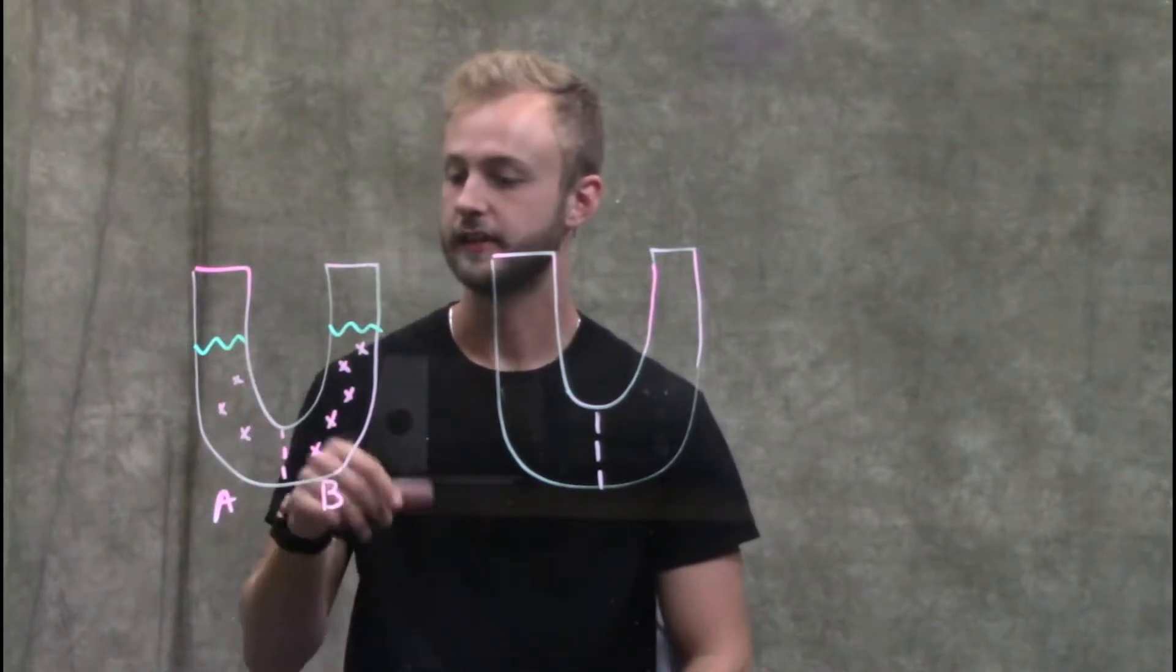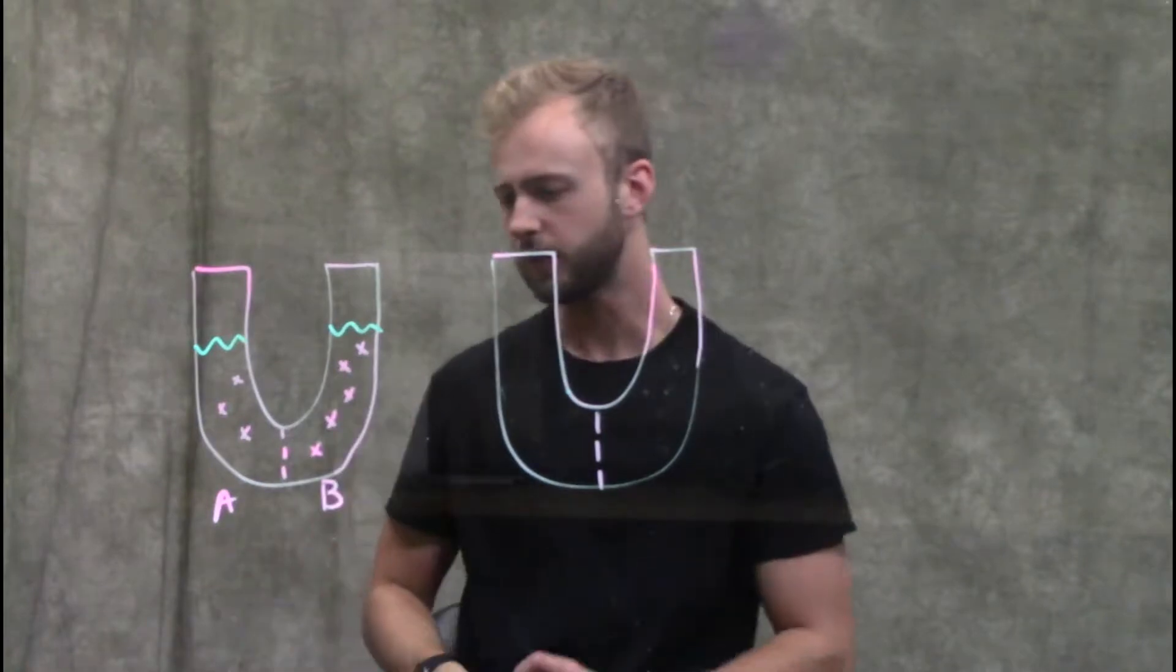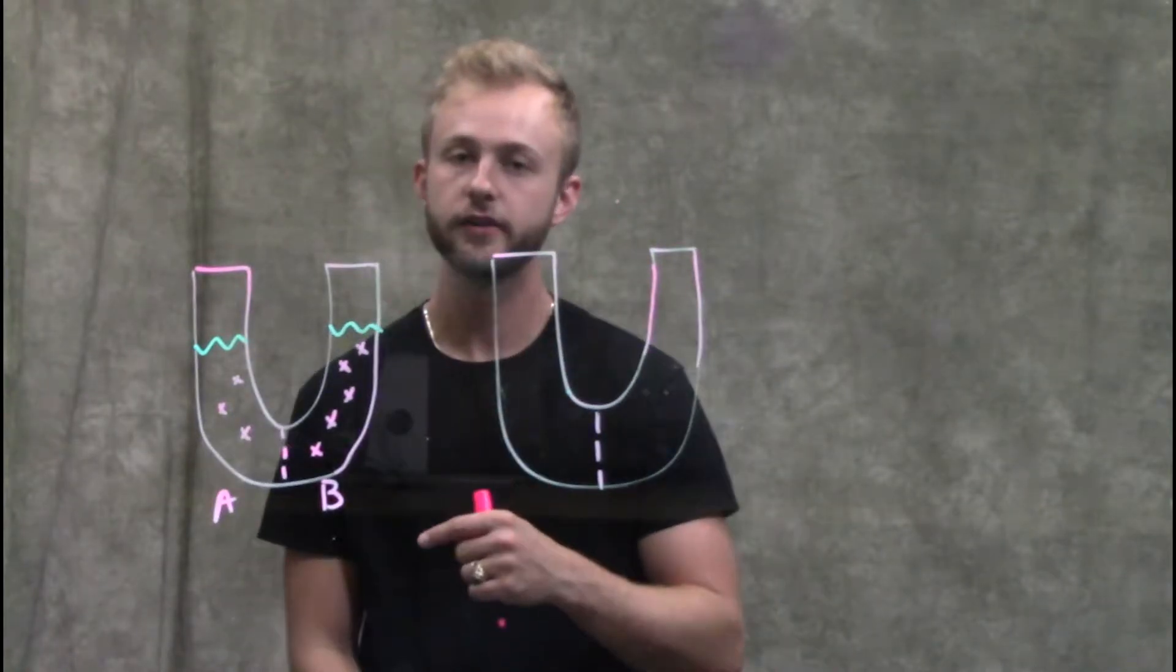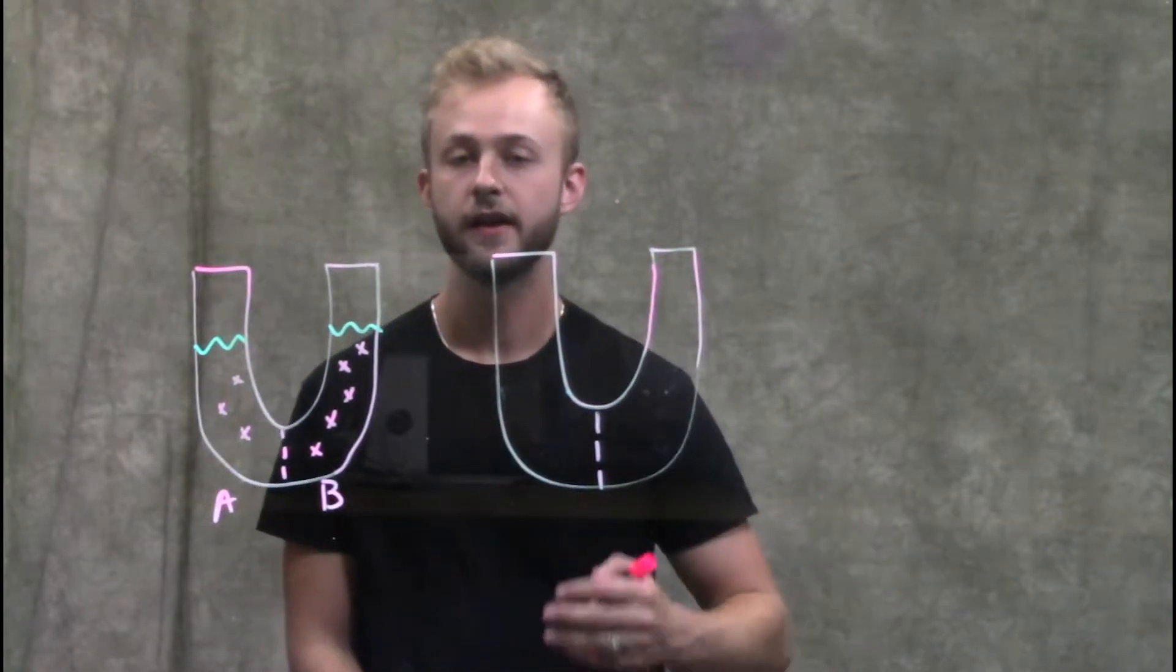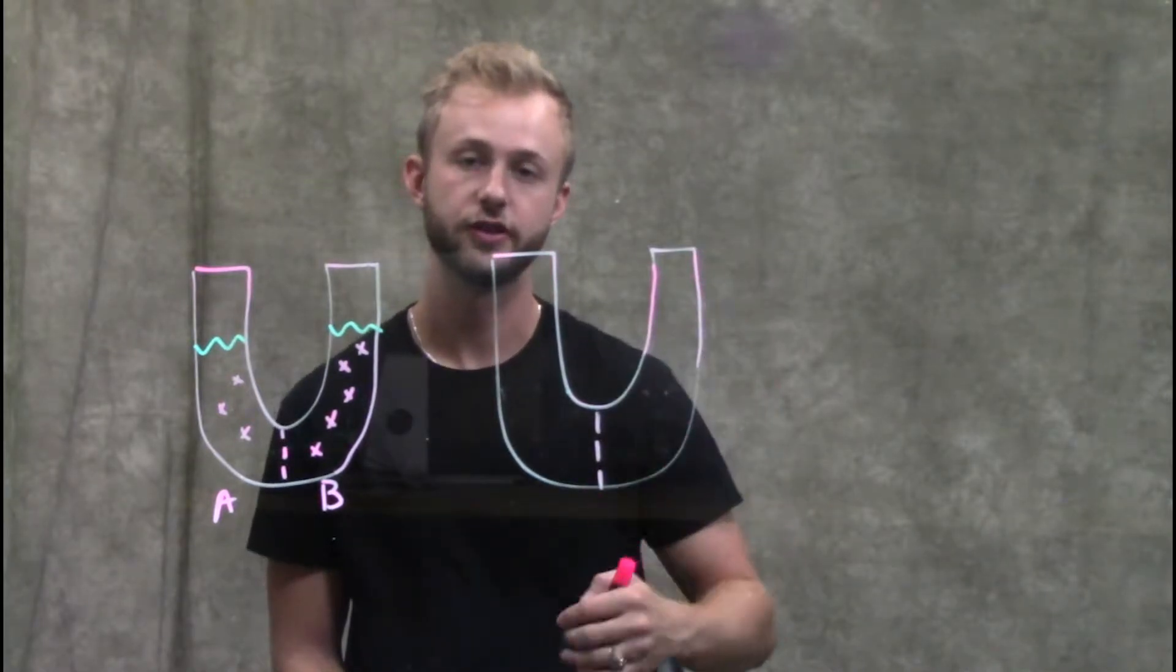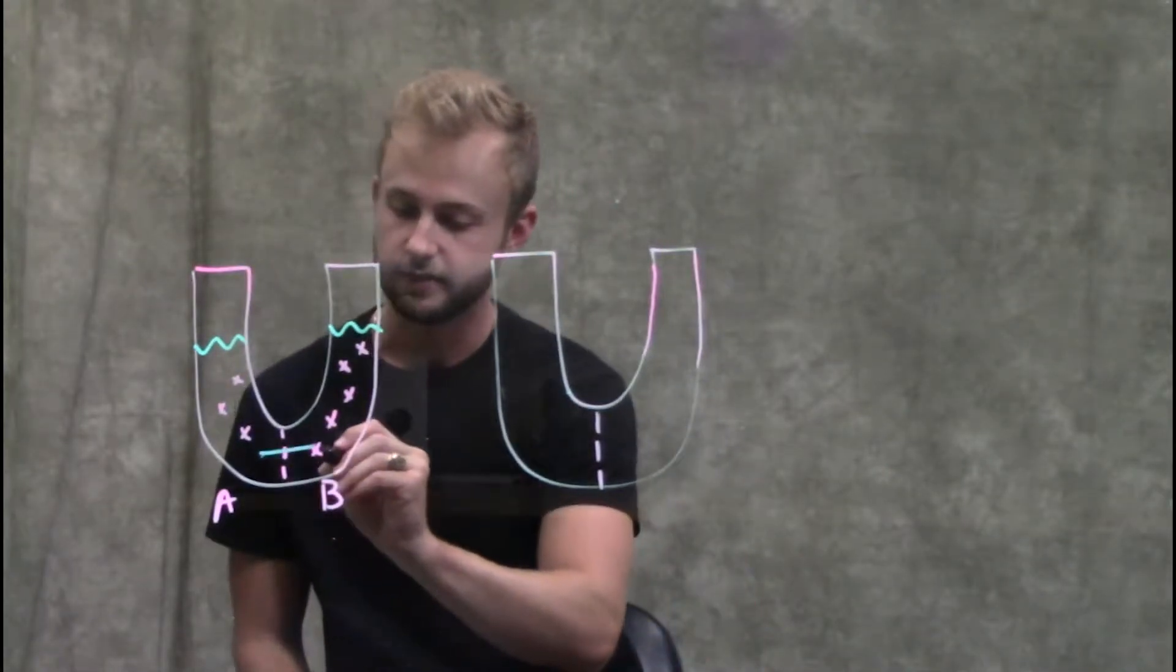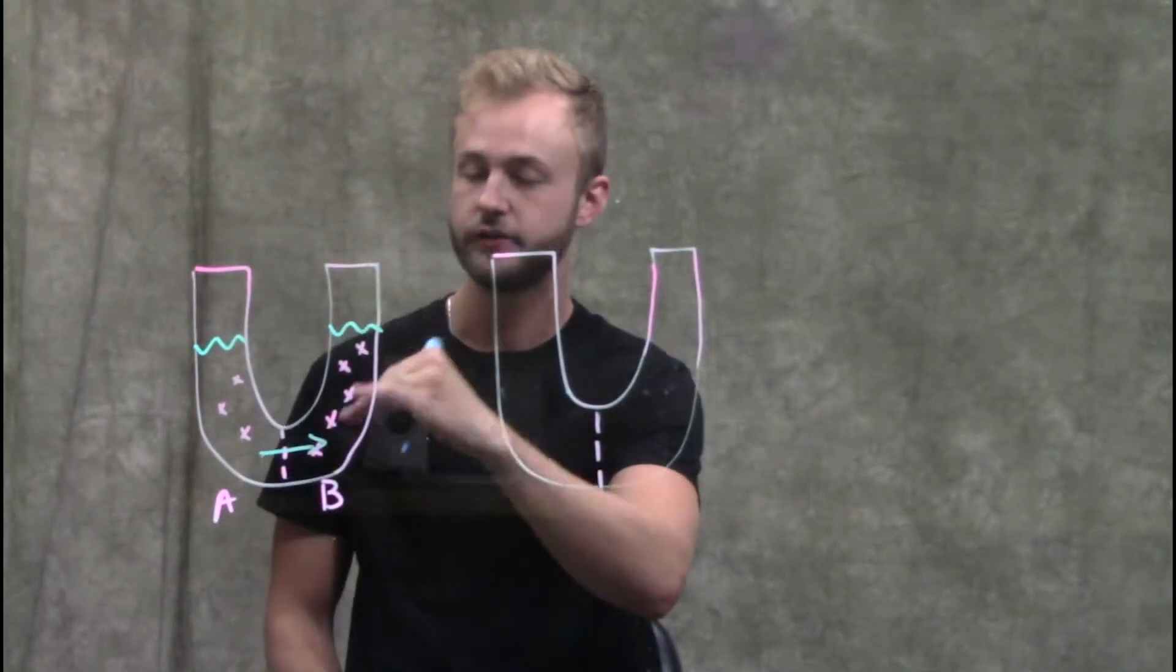When we have a situation like this with our water levels initially equal to one another, water is going to move towards the compartment that has a higher concentration of solute and therefore relatively a lower concentration of water molecules. Water in this case is going to move from compartment A to compartment B.